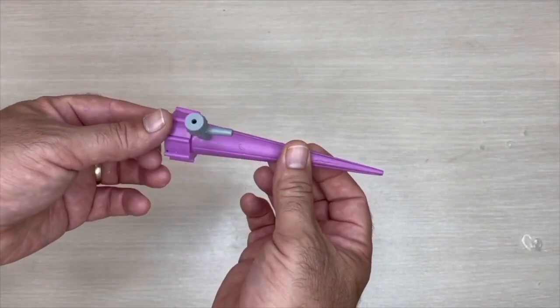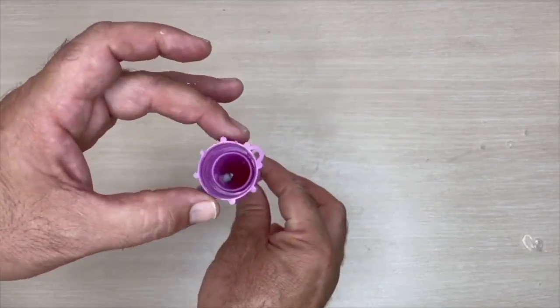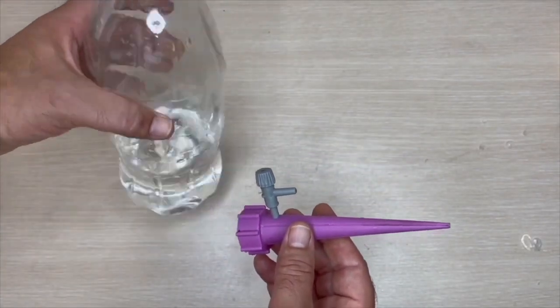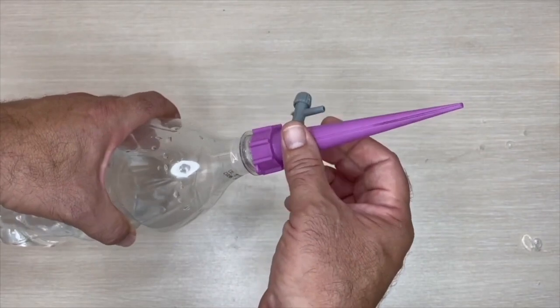Fourth method, there are irrigation units sold on the market. A practical tool that can be installed in the mouth of the bottle. The flow level of the water can be adjusted.